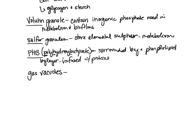There are also gas vacuoles, which are filled with different gases and are used for buoyancy. Bacteria can increase or decrease the amount of gas inside these vacuoles — similar to a swim bladder — to float up closer to the water surface or sink, adjusting their buoyancy by controlling how much gas is inside them.